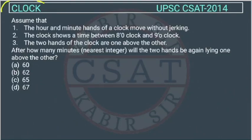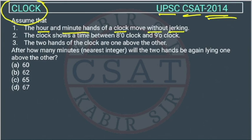This is a question from the clock chapter asked by UPSC in the CSET paper of 2014. Assume that the hour and the minute hand of a clock move without jerking. The clock shows a time between 8 o'clock and 9 o'clock. The clock is working correctly.